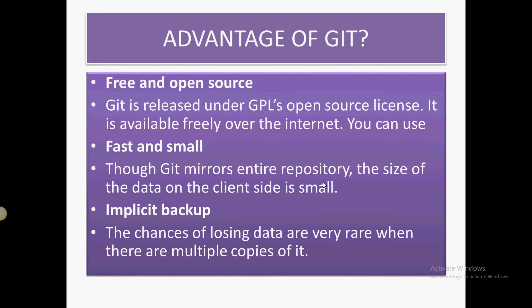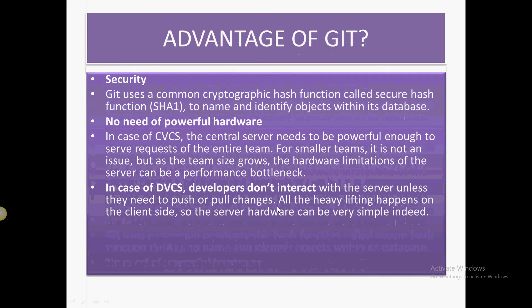The advantages of Git: it is free and open source, released under GPL's open source license and available freely. It is also fast and small — though Git mirrors the entire repository, the size of data on the client side is small. Even if the project size is very large, Git handles it very fast. The chances of losing data are very rare when there are multiple copies.